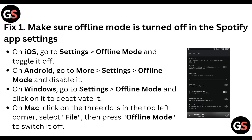First of all, make sure offline mode is turned off in the Spotify app settings. On iOS, go to Settings, then Offline Mode, and toggle it off. On Android, go to More Settings, then Settings, and toggle the offline mode to disable it.